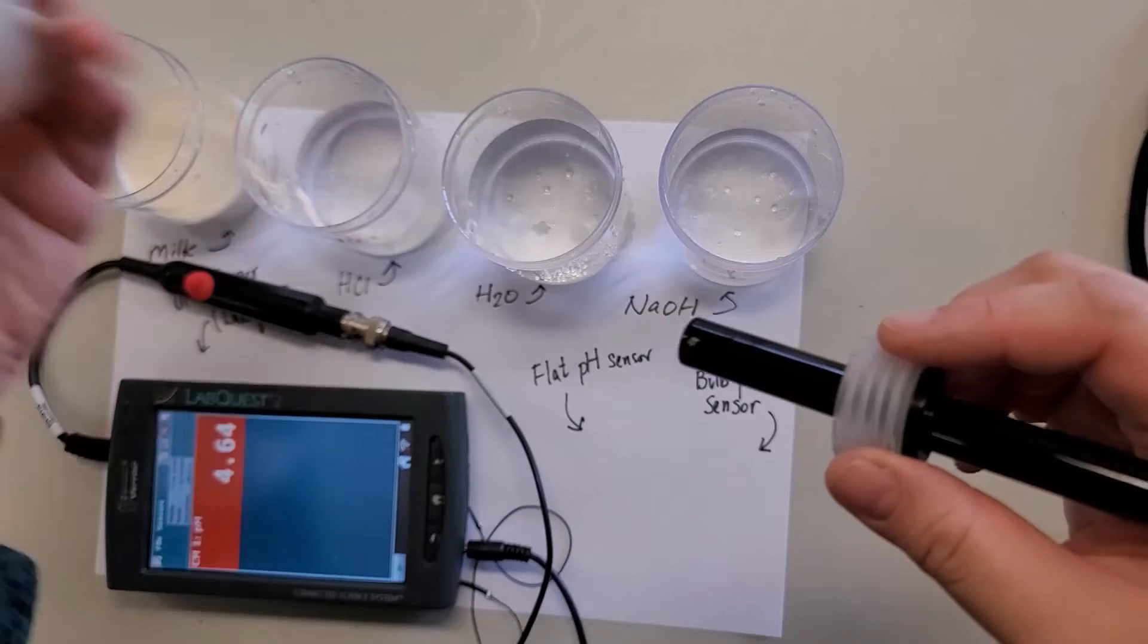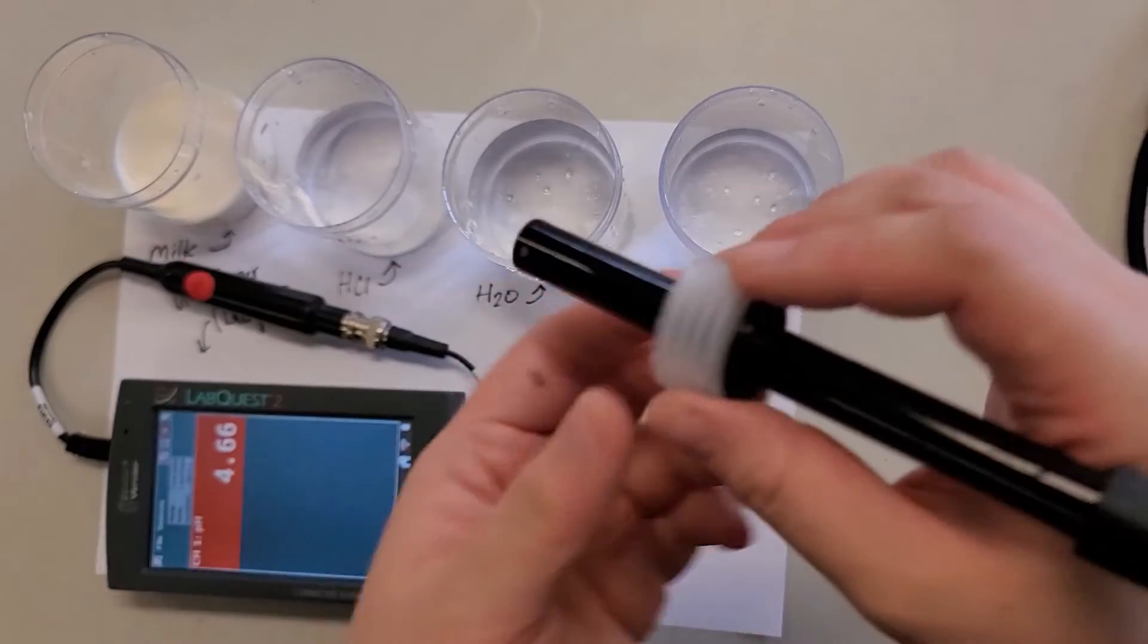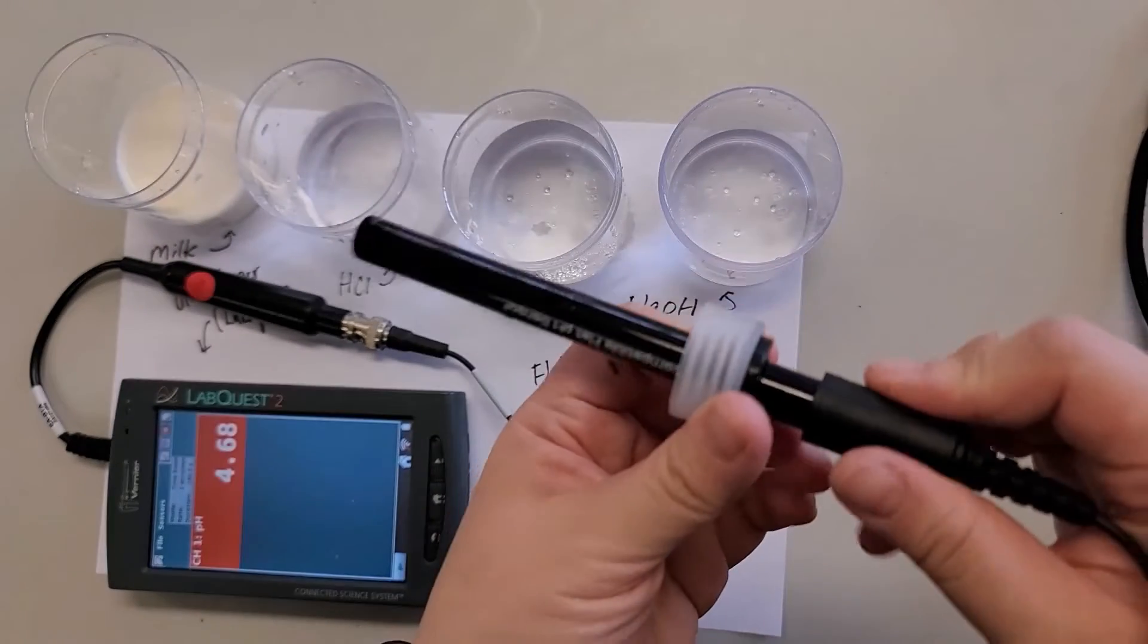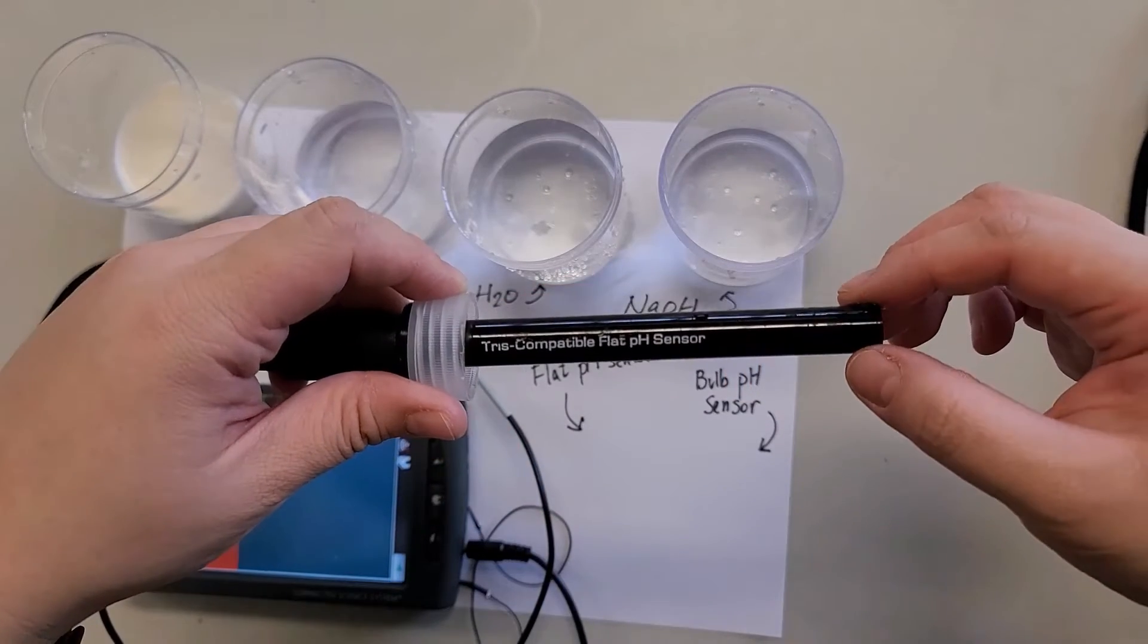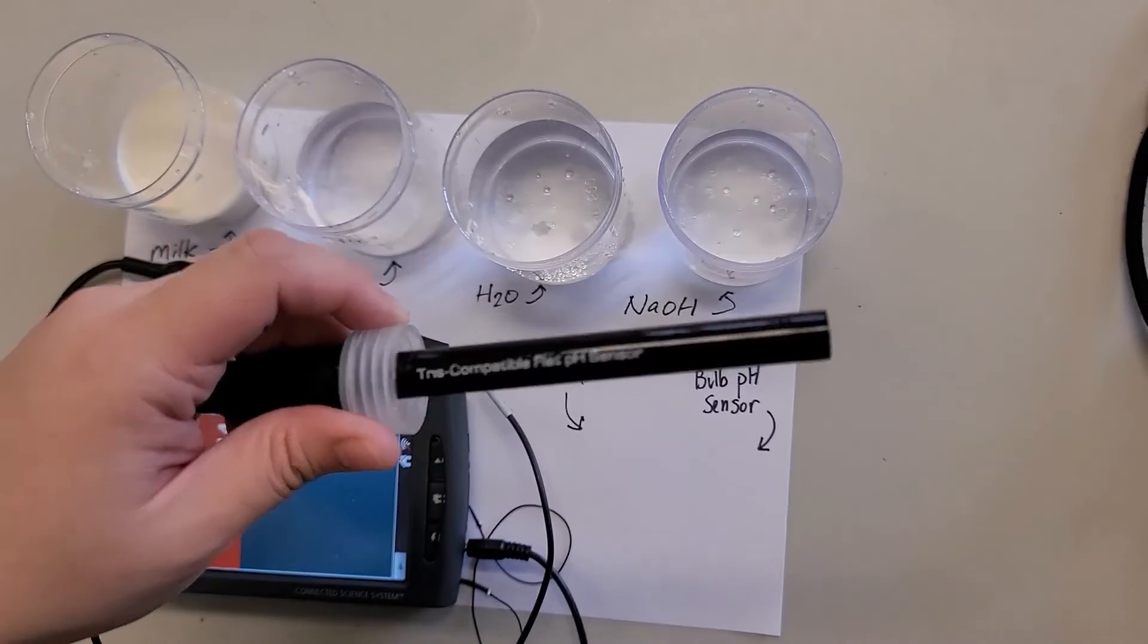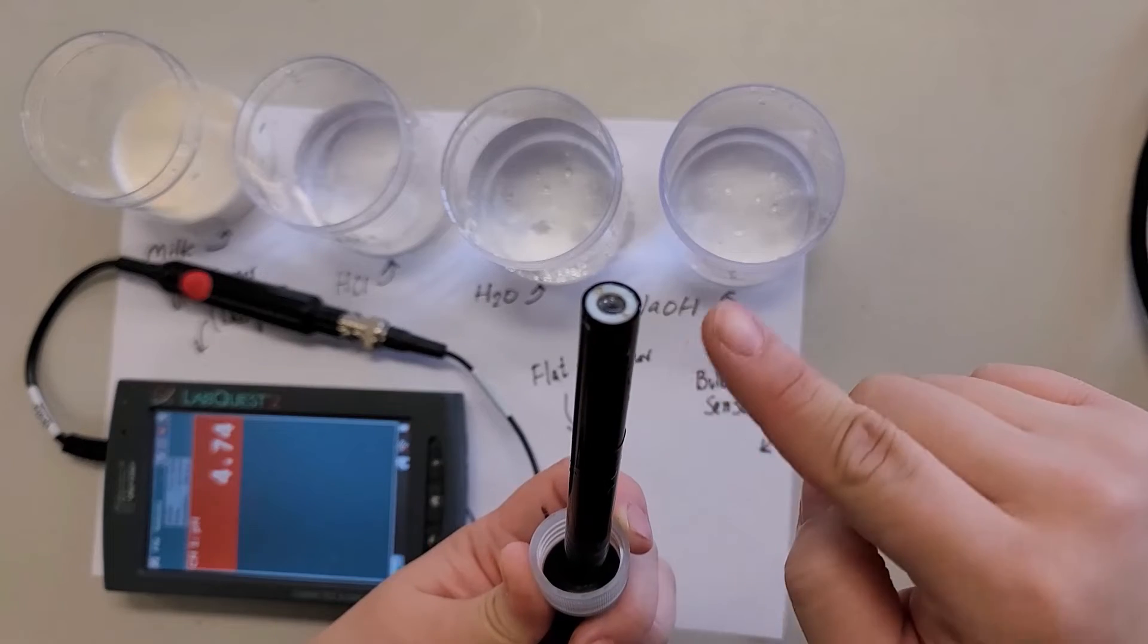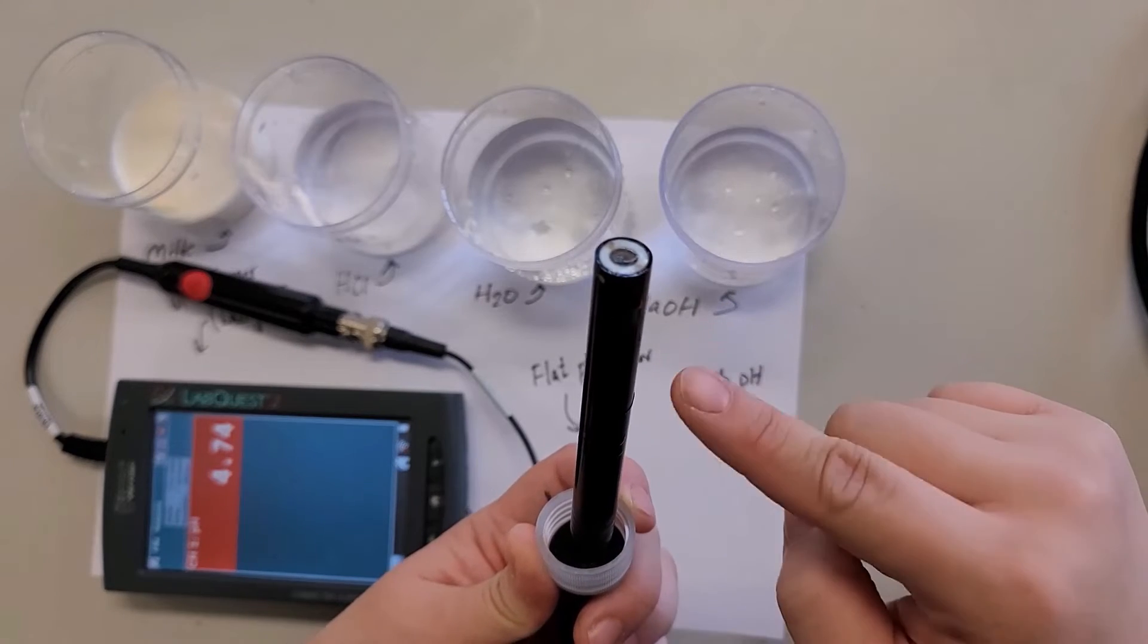Make sure the sensor is always inside the buffer solution when not used. So now this one, as you can see here, this is the flat pH sensor. You can see that there's a very thin membrane at the top. It's very important that we keep it moist.